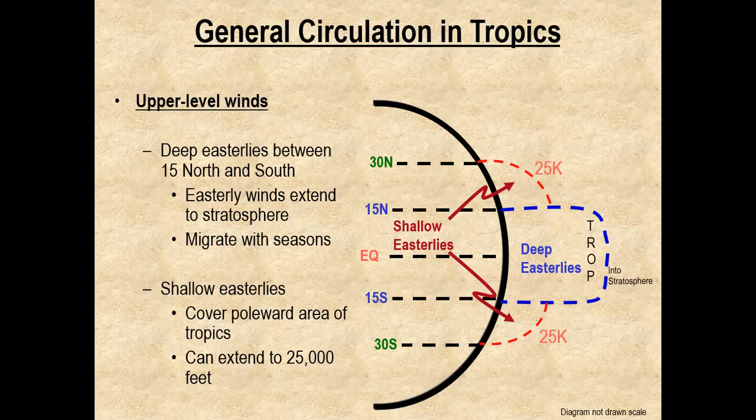In the upper levels of the atmosphere over the tropics, we generally have a deep easterly wind flow between 15 degrees north and 15 degrees south. These easterly winds are so deep that they extend all the way up into the second layer of the atmosphere, the stratosphere. These deep easterlies migrate with the seasons. We also have shallow easterlies, which are polar of that, found between 15 and 30 degrees north or south latitude respectively, and they can extend up to 25,000 feet.